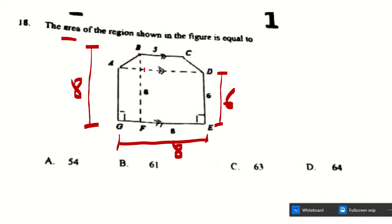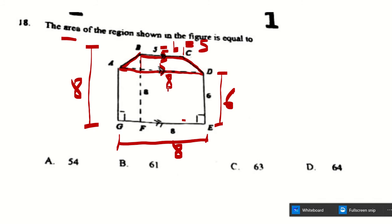The upper part is a trapezium because the two horizontal sides are parallel. The upper base is given as 5 and the lower base of the trapezium is 8. To find the height of the trapezium, we subtract the rectangle height from the total height: 8 minus 6 equals 2.